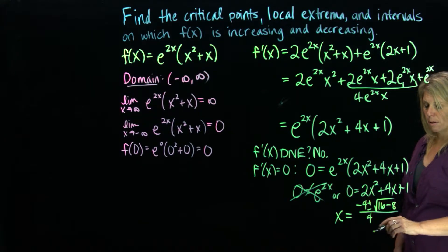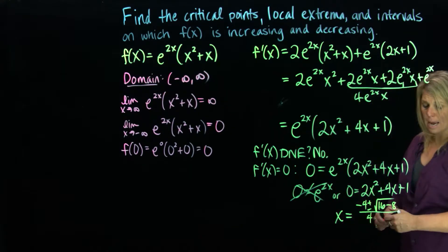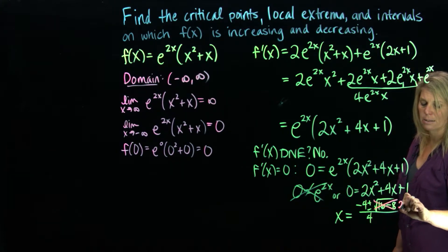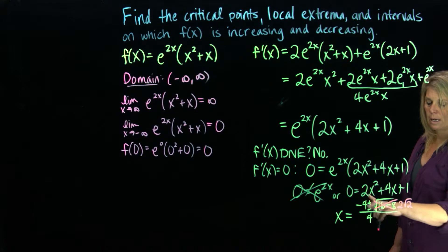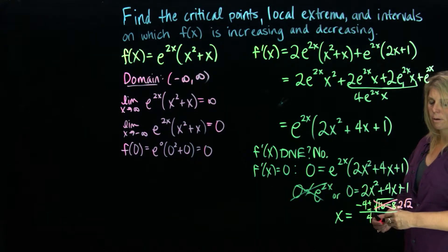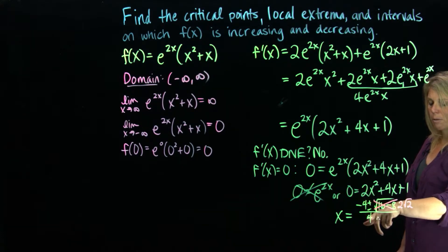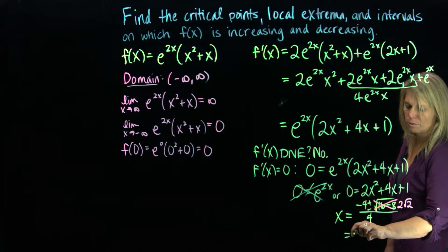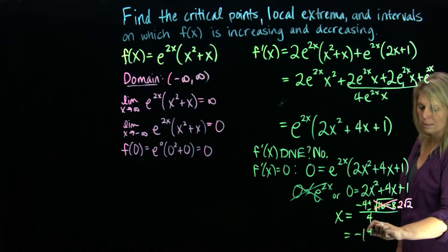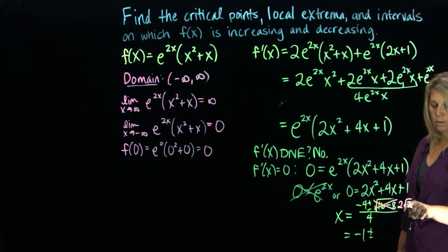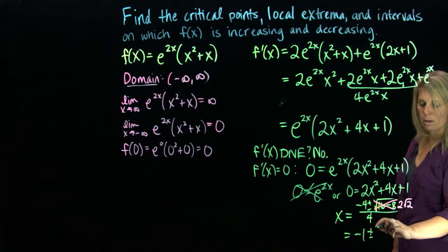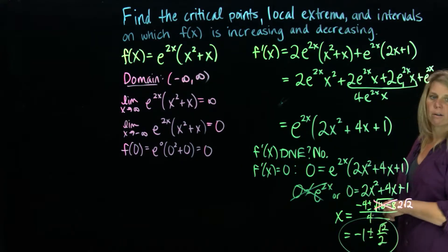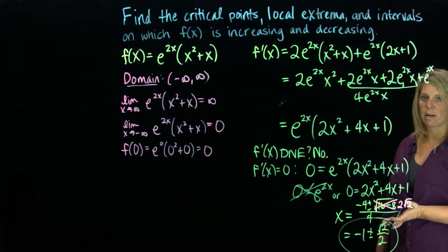Simplifying: 16 minus 8 is 8, and the square root of 8 rewrites as 2√2. Splitting up the fraction gives negative 4 over 4, which simplifies to negative 1, plus or minus 2√2 over 4, which simplifies to √2 over 2. So our critical points are x = −1 − √2/2 and x = −1 + √2/2.